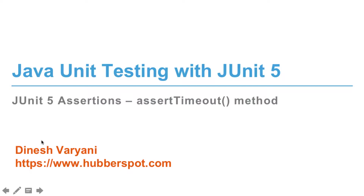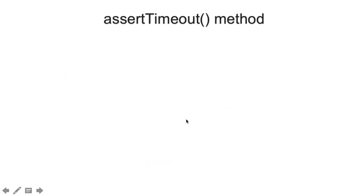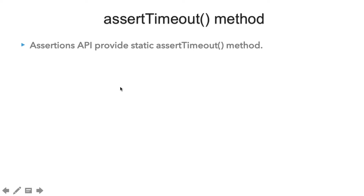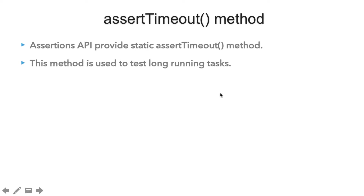Let's continue to discuss JUnit 5 assertions. In this lecture, we will discuss the assertTimeout method. The assertions API provides a static assertTimeout method. This method is used to test long-running tasks. If you have written a piece of code and want to test whether it is efficient or not performance-wise, then you can use the assertTimeout method.